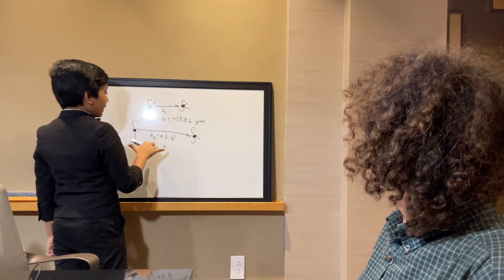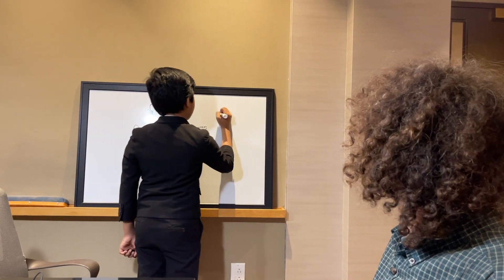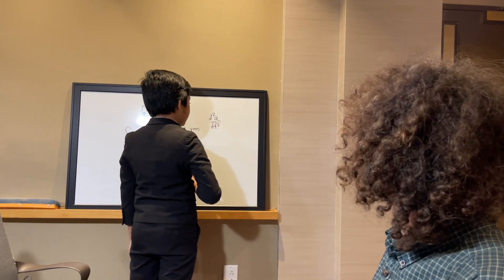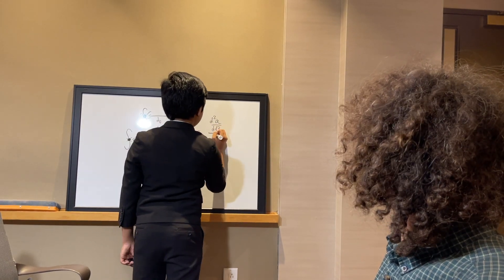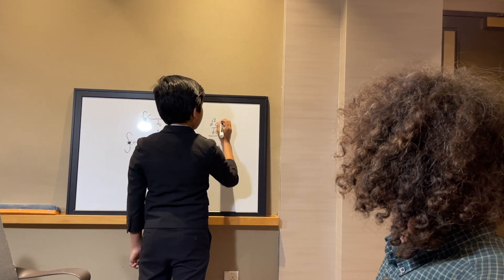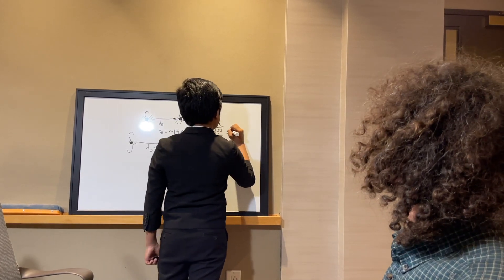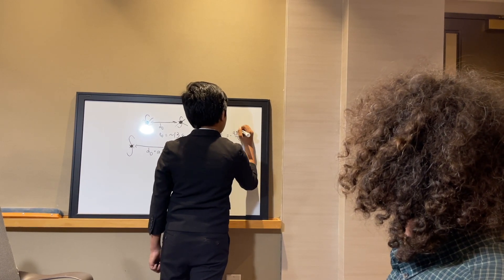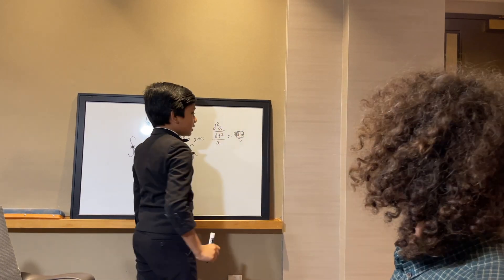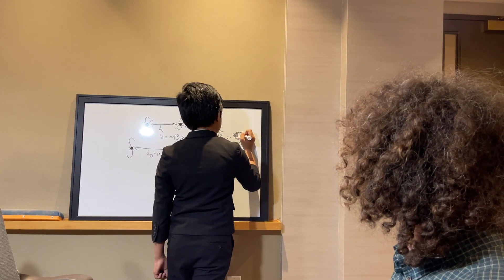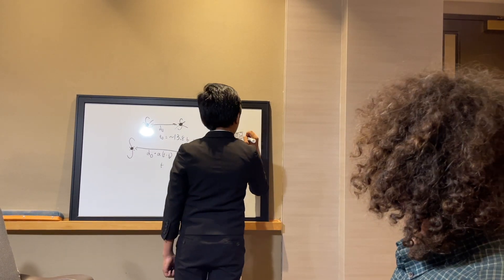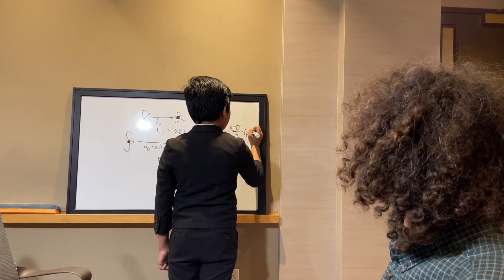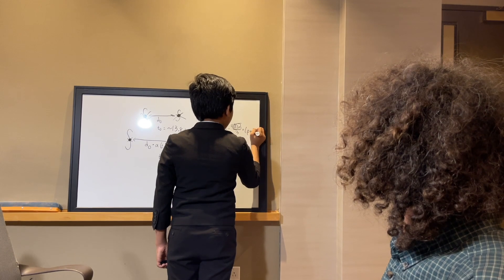I believe that this can all be described in an equation: d squared a over dt squared, which is essentially the acceleration of the scale factor, divided by a, is equal to minus 4 pi z over 3. This pi z thing looks extremely similar to Einstein's field equation, by the way, plus, I believe, rho plus 3p.